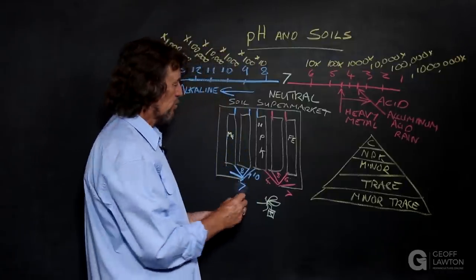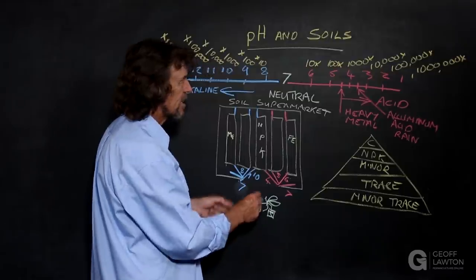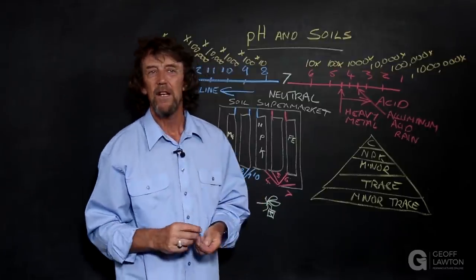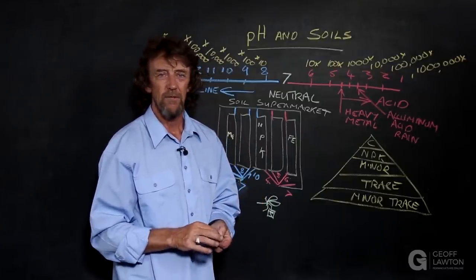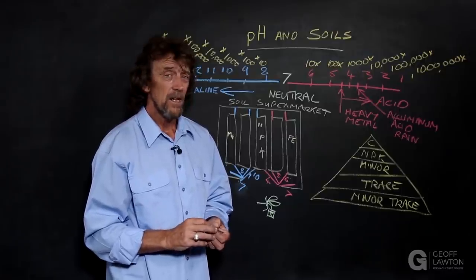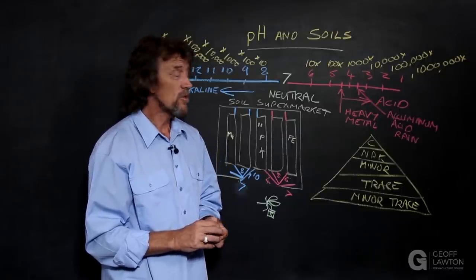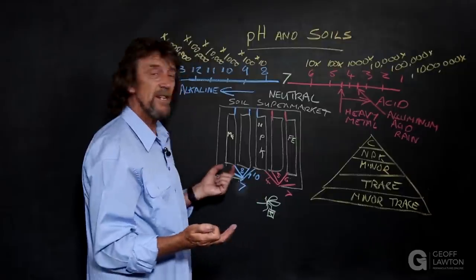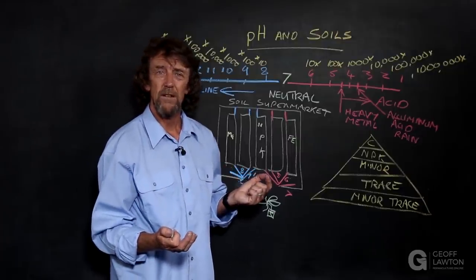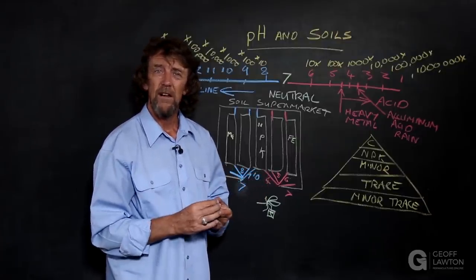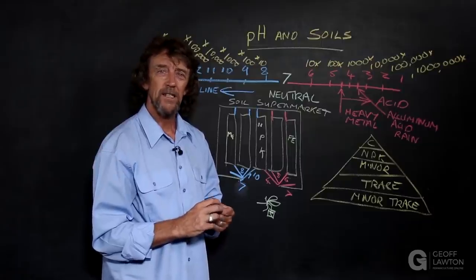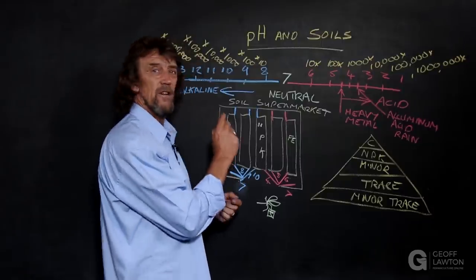So we have to be careful what's going on. We have to understand that we might have a soil that's full of the right elements. We've got a good quality soil, but it's not available. The doors are shut. So, availability is the function of pH.